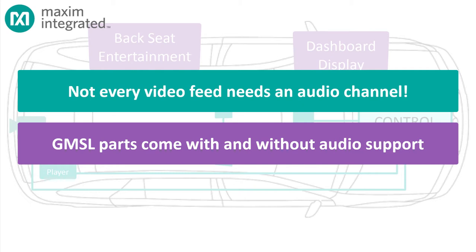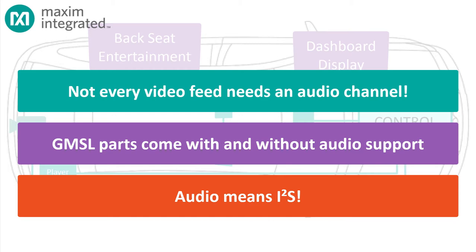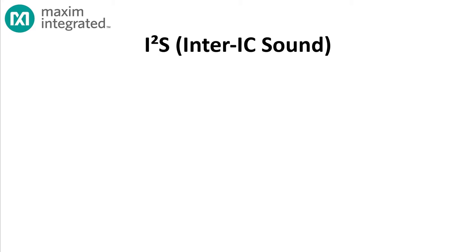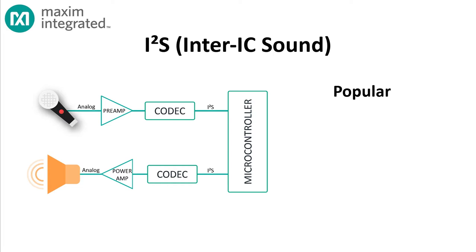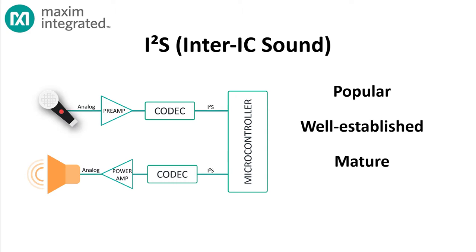Within a system that supports digital audio, it's most often carried over I2S. I2S stands for Inter-IC Sound, and it does pretty much what the name implies — it moves audio from one device in a system to another device in the same system. It's the most popular interface for audio codecs, and it's a well-established, mature protocol. To understand how it works, we need to cover a few audio basics first.